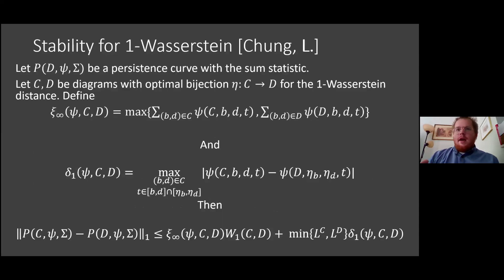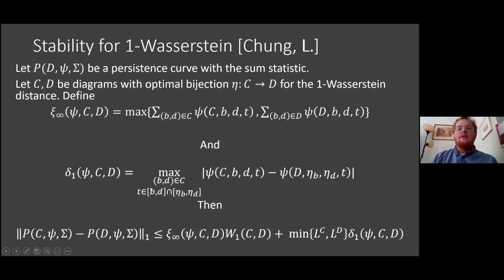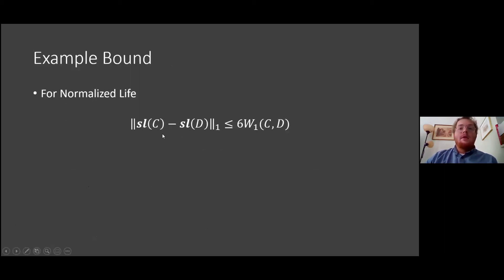We also have stability results with respect to the one-Wasserstein distance. For the normalized life curve, plugging into the framework gives a solid stability result, and similarly for the normalized midlife curve, while basic curves still fail to be stable.